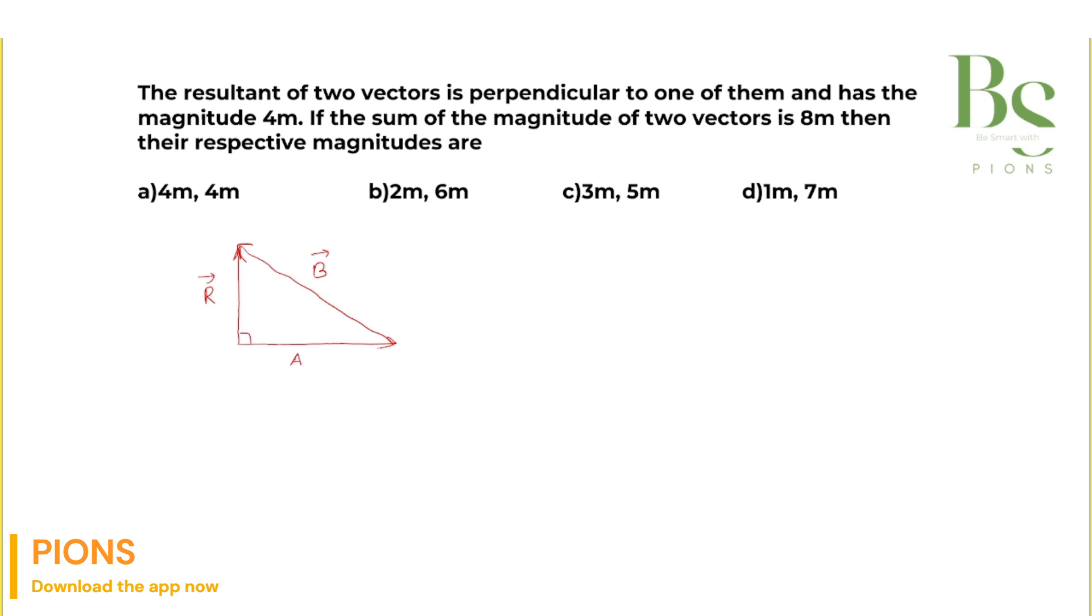The magnitude of this R is nothing but 4. If the sum of the magnitude of two vectors is 8 meters, their respective magnitudes are what?